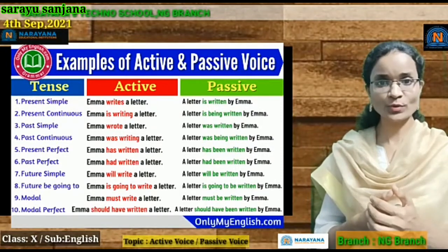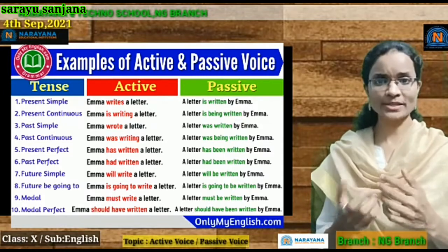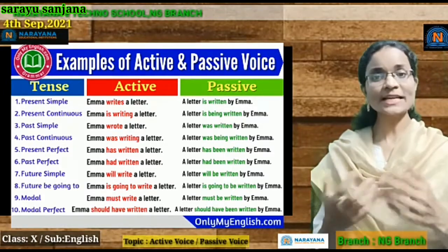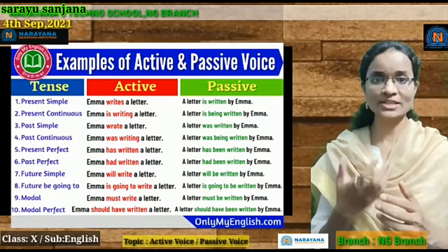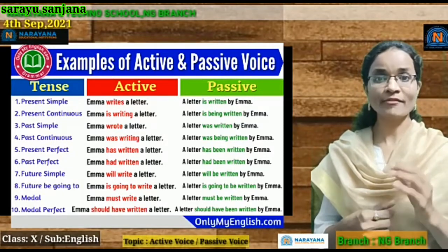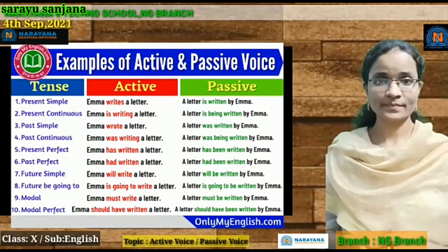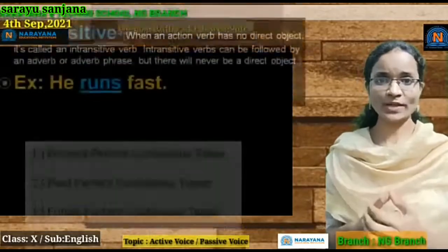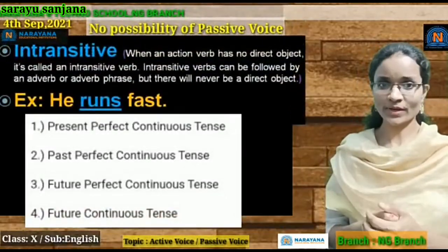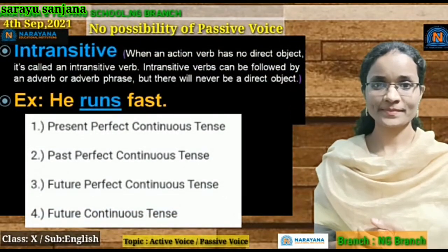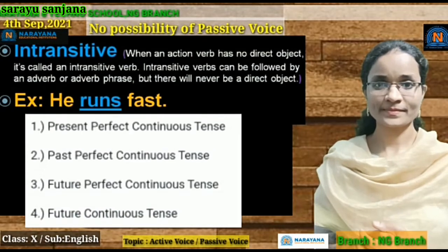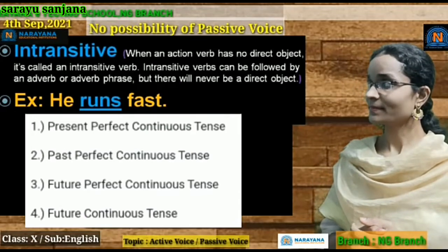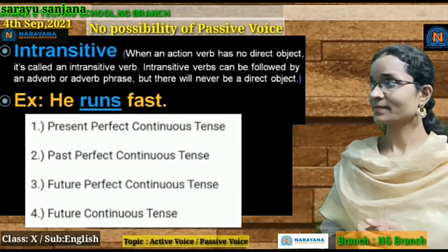If the sentence belongs to past perfect or present perfect, we are going to add 'been'. If the sentence belongs to simple future with 'will' or 'shall', it becomes 'would be' or 'shall be'. There are exceptions: intransitive verbs cannot change into passive voice. Also, present perfect continuous, past perfect continuous, future perfect continuous, and future continuous tenses cannot be changed into passive voice.